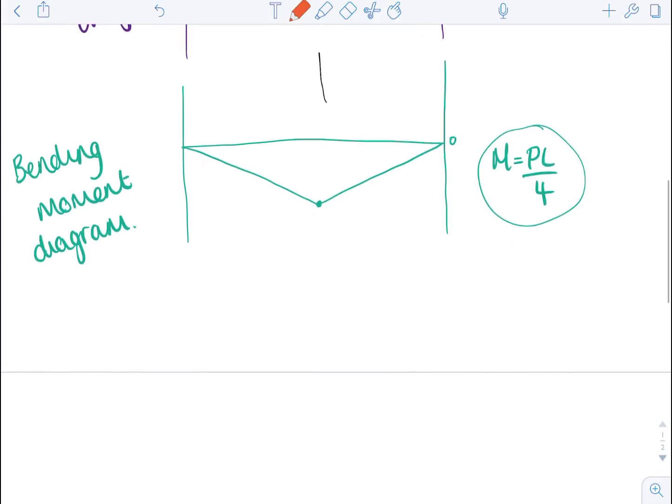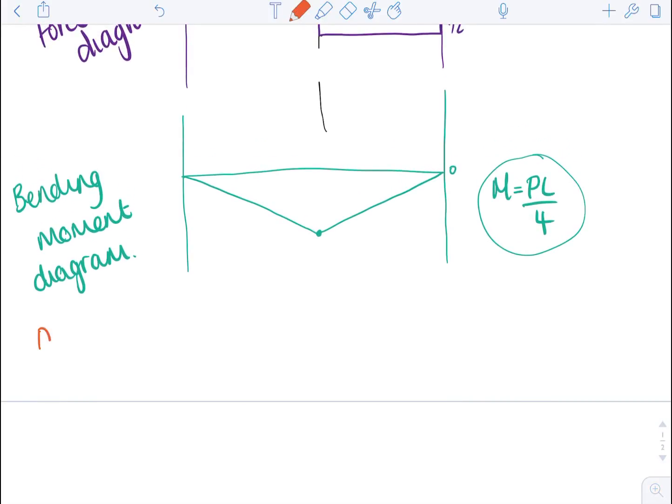And there is quite a simple way that you can work this out. So in this case, deflection is equal to PL cubed over 48EI.